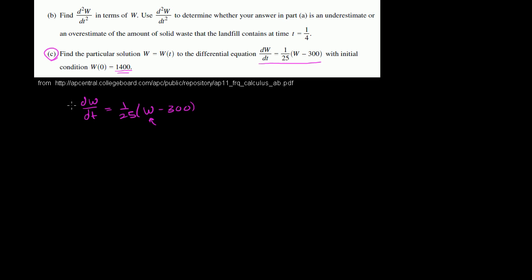Let me rewrite this differential equation. We have dw/dt is equal to 1 over 25 times w minus 300. This differential equation has w here and dt, but we don't have t anywhere else. So I want to get the parts that involve w onto the left-hand side. I want to get anything that deals with dt on the right-hand side. So let's divide both sides by w minus 300, giving us 1 over (w minus 300) times dw/dt is equal to 1 over 25.